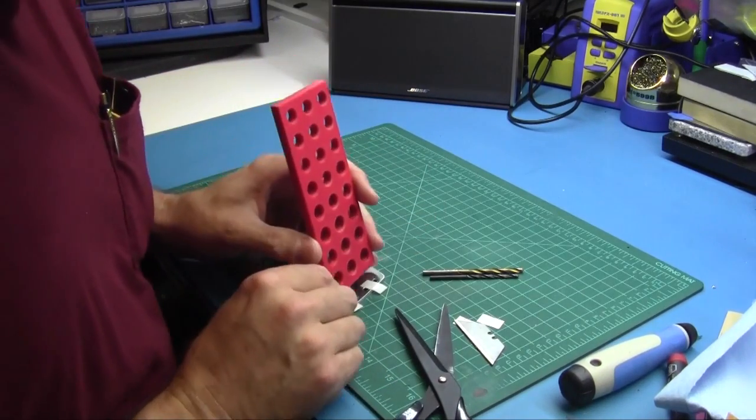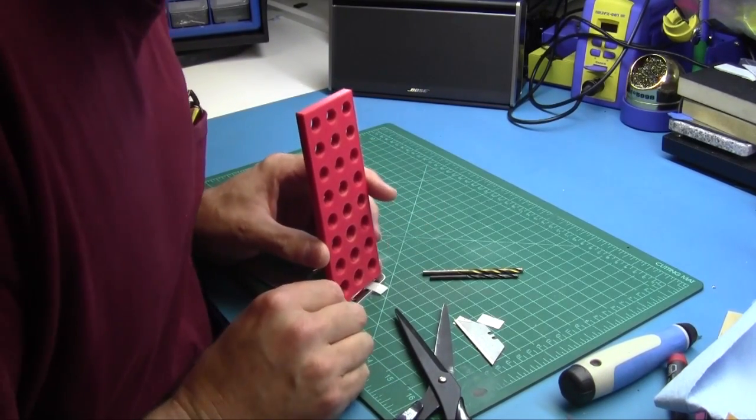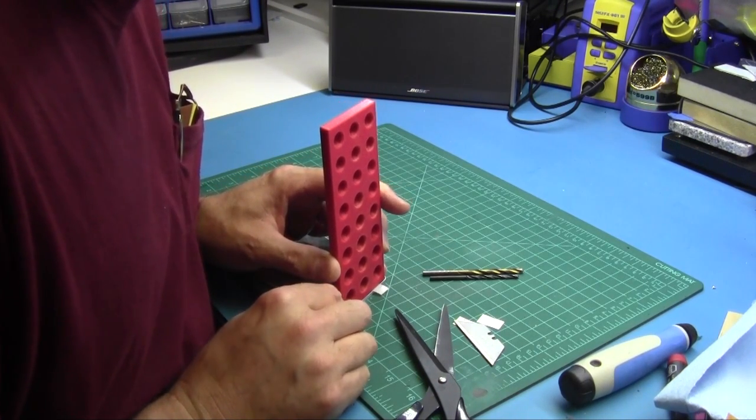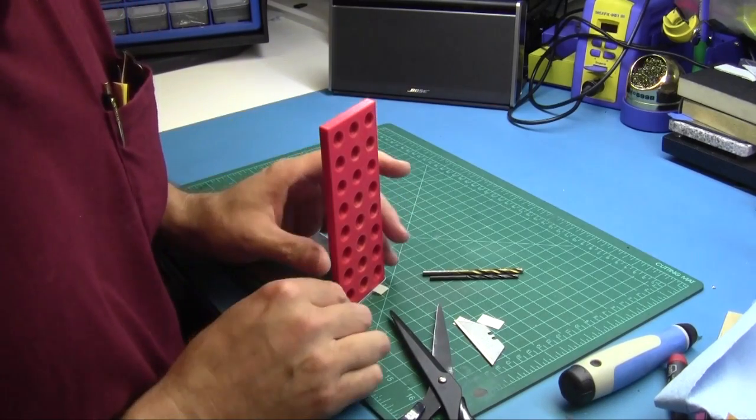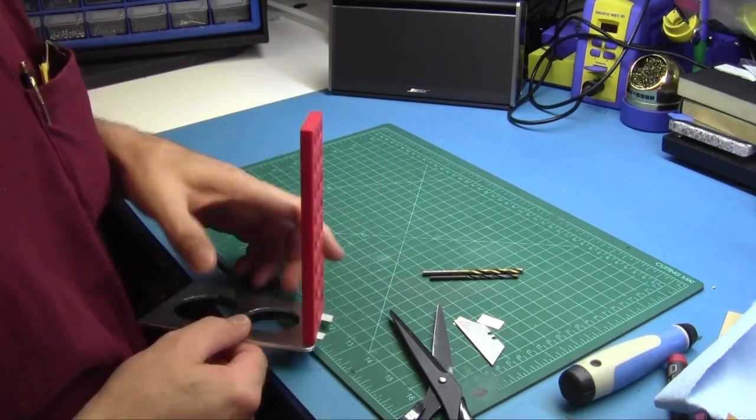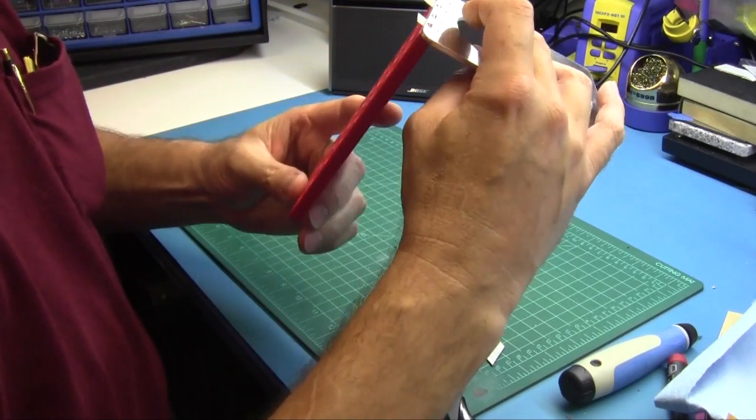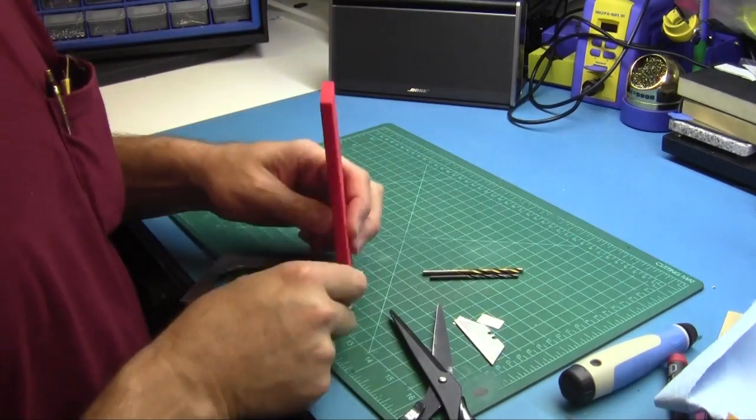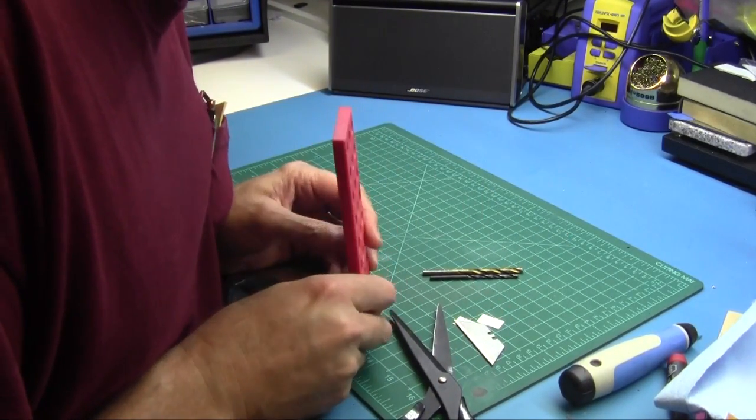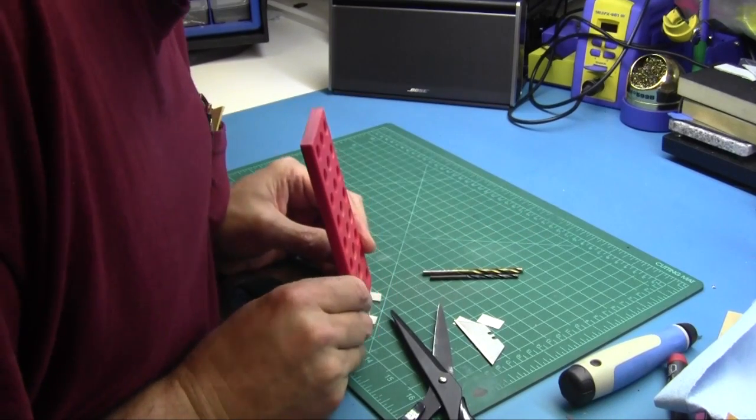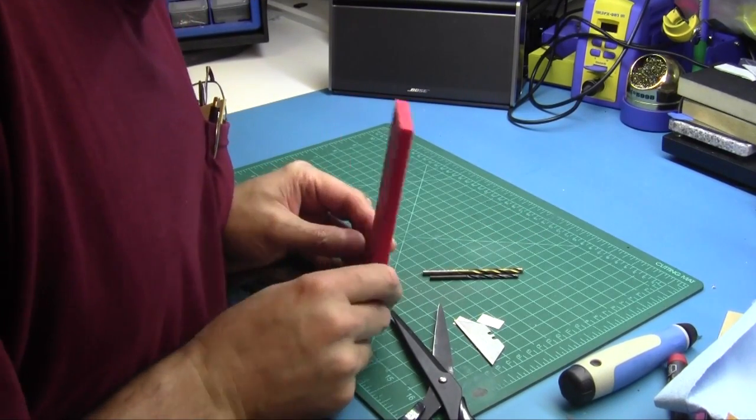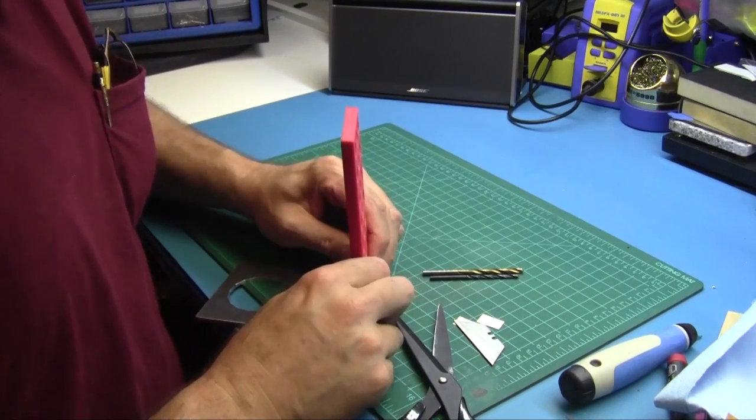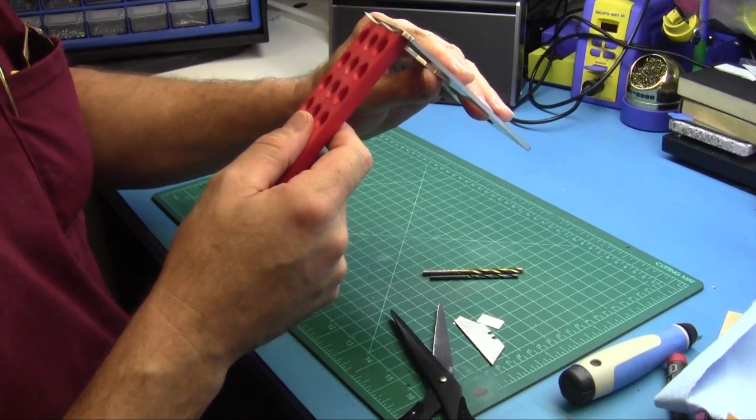Then what I'll do is I'll just lay it down and align it where I want it. That looks good. You can kind of see where it is. Looks like the screw holes will go good. I'll move it over just a hair. There. Now that looks good.